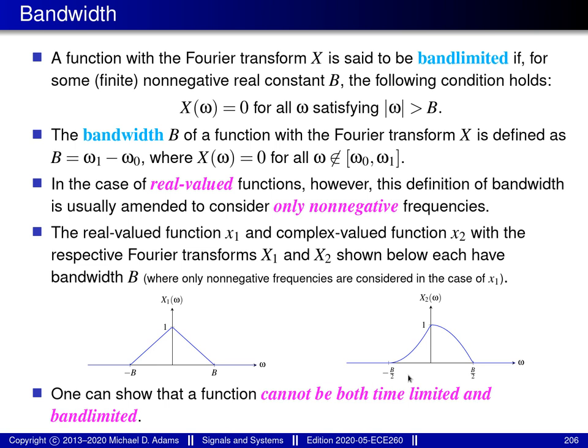For little x2: it has Fourier transform big X2, and by inspecting its graph, big X2 is not conjugate symmetric. Therefore, little x2 is complex-valued but not real-valued. Because little x2 is not real-valued, we consider negative frequencies when determining the bandwidth. The Fourier transform big X2 is non-zero over the range from minus b over 2 to plus b over 2, which is an interval of length b. Therefore, the bandwidth of little x2 is b.